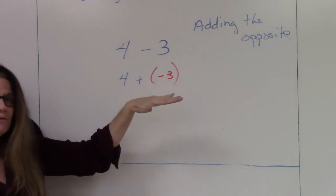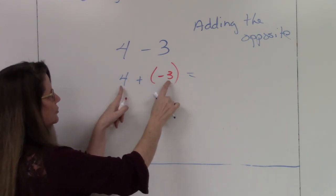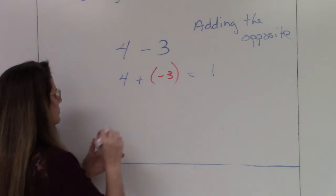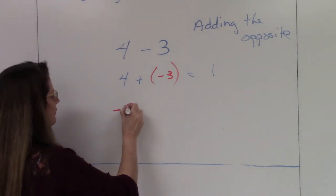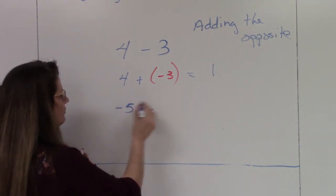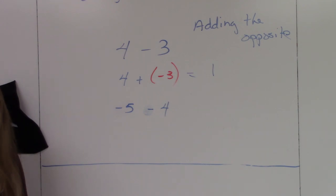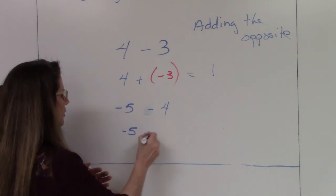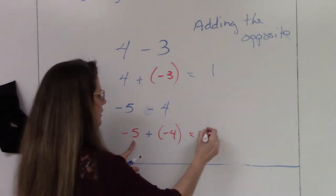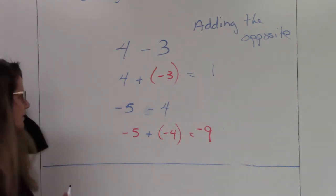Using our rules for different signs, the difference between four and three is one, and the larger number is positive, so the answer is positive one. For another example: negative five minus four. The minus sign is gone — we're adding the opposite — so this becomes negative five plus a negative four. Now we have the same sign: add the numbers and give the answer that same sign, which is negative nine. Subtraction is just another way to see algebraic addition — you're adding the opposite.